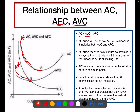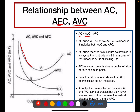Both the AC curve and the AVC curve fall and reach a minimum point. The minimum point of the AC curve is always on the right side of the AVC's minimum point. Look at the diagram — point B is the minimum point of AVC, and point A is the minimum point of AC, which is on the right side of AVC's minimum point.